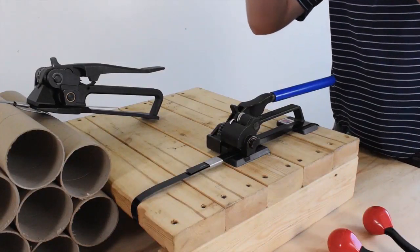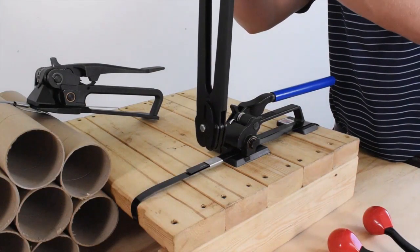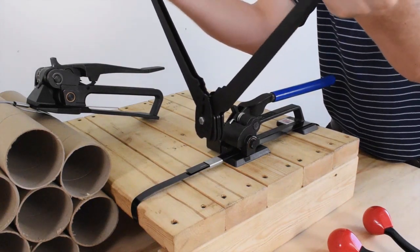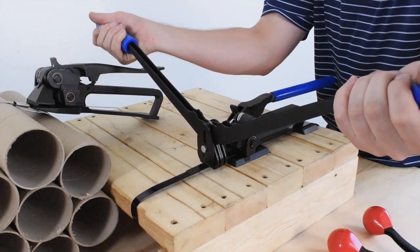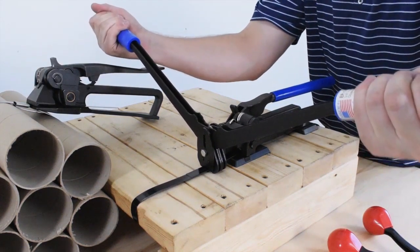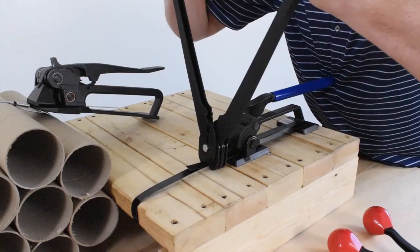So first you're going to position your sealer over your seal and then you're going to open your handles to open the jaws of the sealer and position those open jaws over your seal and then you're going to close those handles to make your crimp.